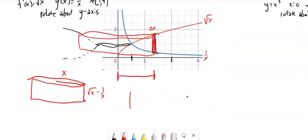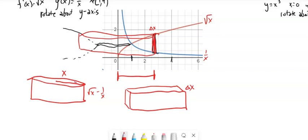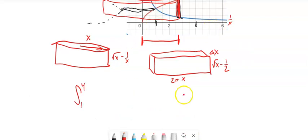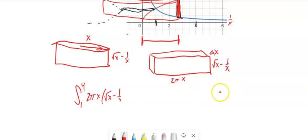If we cut that and fold it out, there's our change in x — that's the rim. The height is √x minus 1/x. And this distance is the circumference of that circle, so 2π times x. My setup for this should be the integral from 1 to 4 of 2πx times (√x minus 1/x) dx.